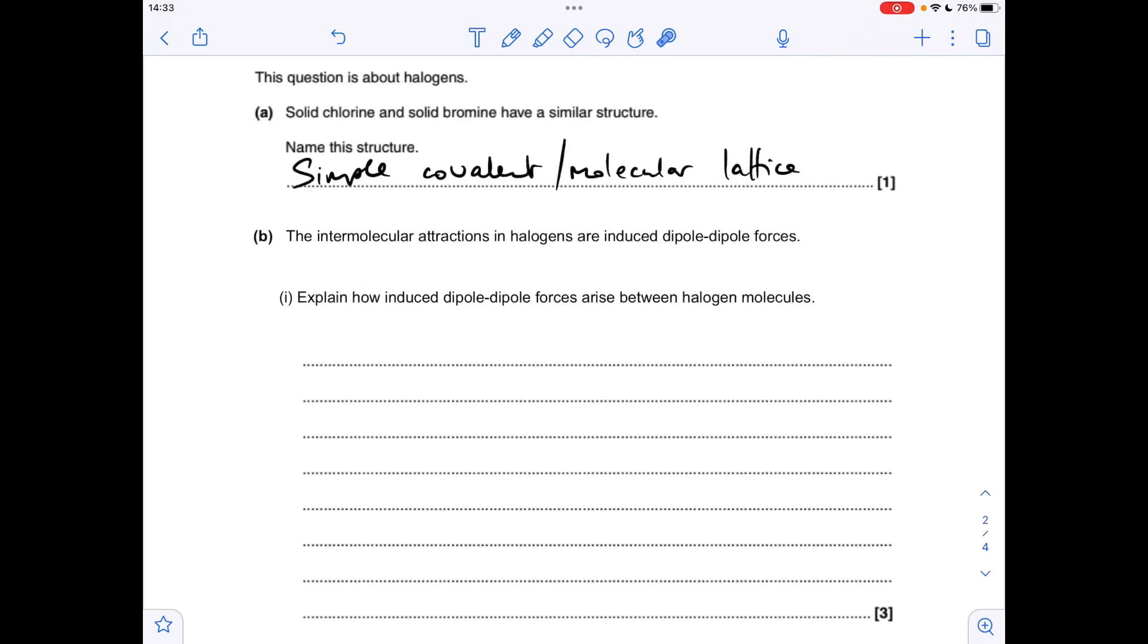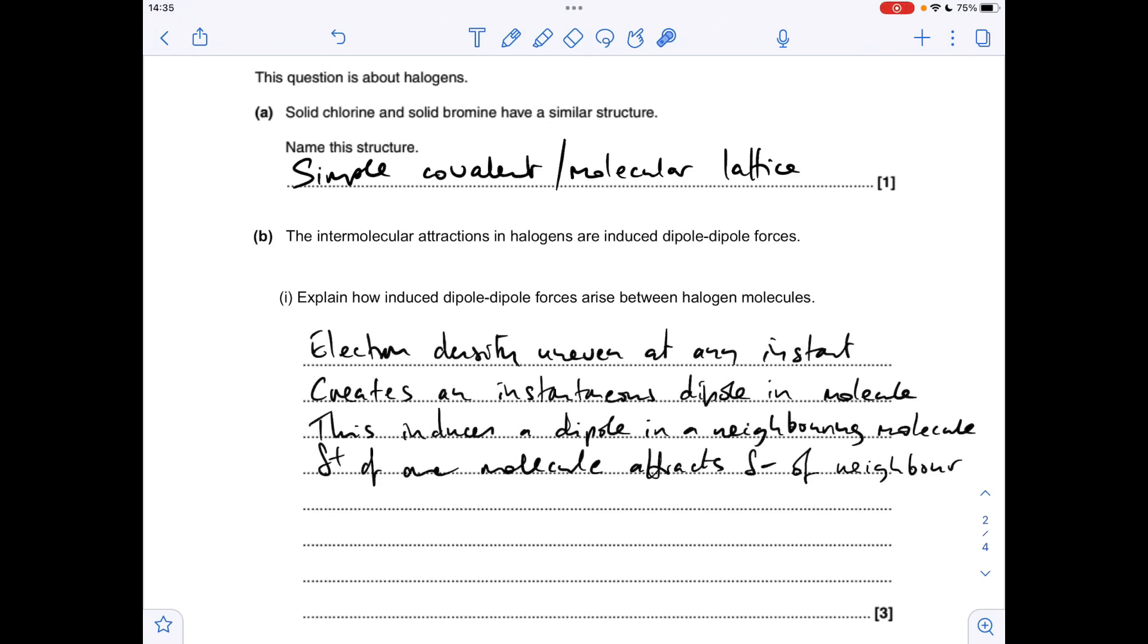Moving on to the next question about the halogens, so both solid chlorine and solid bromine have got simple covalent or simple molecular lattice structures. Moving on to part B.